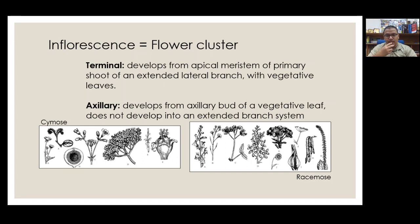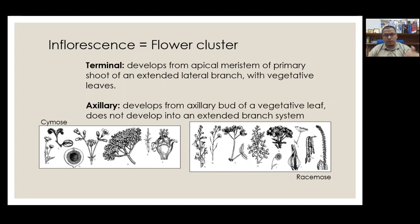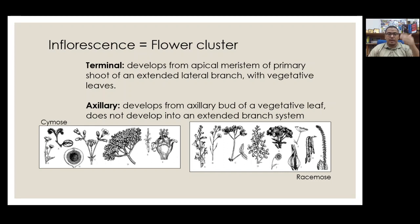Two principal types of inflorescence are differentiated: racemose, which is indeterminate or polythetic, where the axis has unlimited growth, bearing the oldest flowers toward the base and youngest toward the top. In cymose inflorescence, the main axis has limited growth, being terminated by a flower, with the oldest flower either in the center or flowers of different ages mixed.